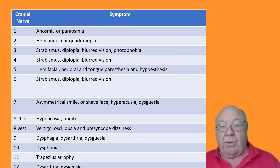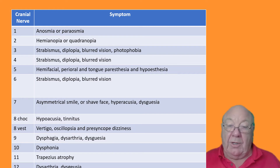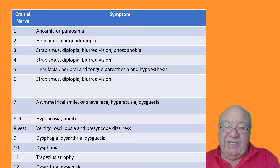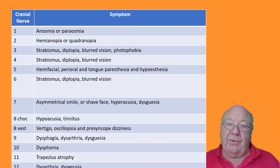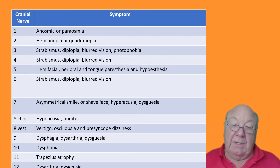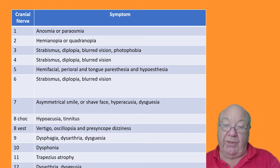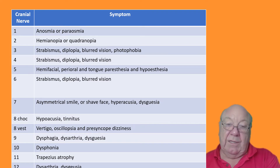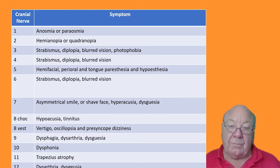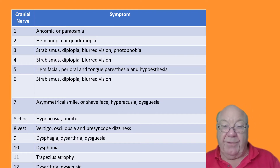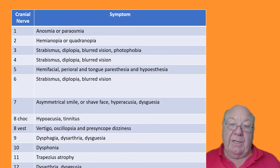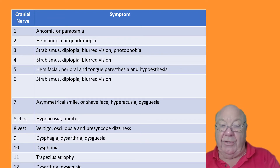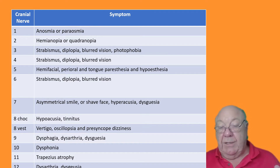Cranial nerve eight, cochlear portion — deafness, loss of hearing, hypoacusis, and more likely tinnitus. Unless the onset of deafness is very sudden and profound, the patient won't notice it — their spouse might, but they won't. Tinnitus tends to be high frequency when there's a central problem involved. Cranial nerve eight, vestibular portion — the symptoms are dizziness, vertigo, oscillopsia, or presyncope, either individually or combined.